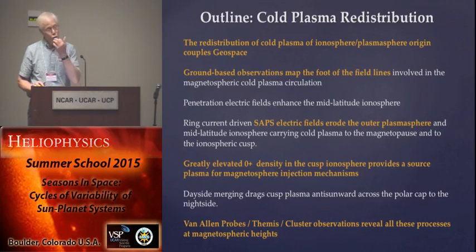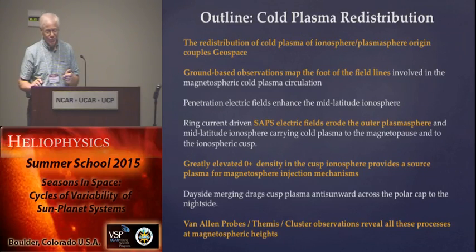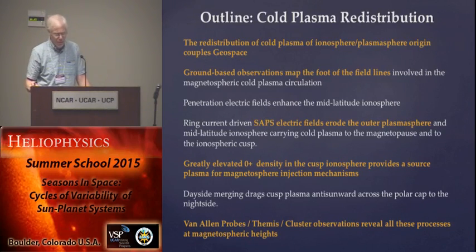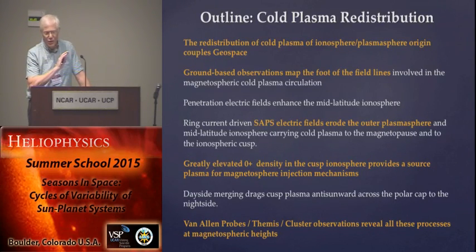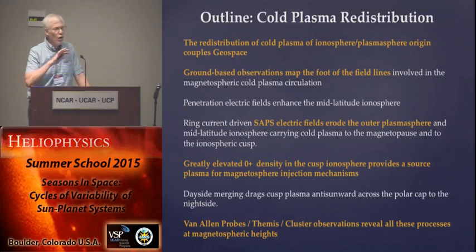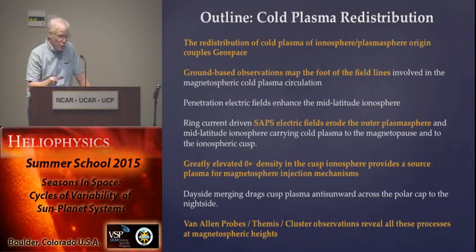We saw earlier that you can calculate Joule heating from the observations of precipitation and electric field. What I'd like to talk about now is an example of how we can look at the interconnectivity of this geospace system — how all of these cyclically varying mechanisms driven by the solar wind, driven by F10.7 fluxes or solar EUV, the ionization in the Earth's ionosphere — all of these things couple to make a system more understandable. I've shown you the GPS TEC measurements to look at total electron content.